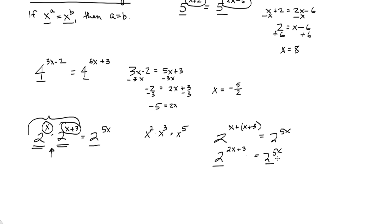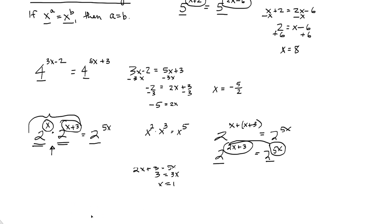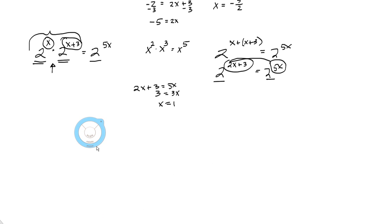We've got an expression on each side of the equation. Same base, 2. We can set these two exponents equal to each other. 2x plus 3 equals 5x. Subtract 2x. Divide by 3. x equals 1. So if you don't have a single expression on each side, you need to make a single expression before you can use this property.